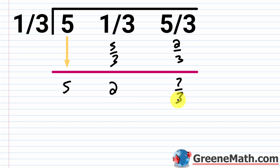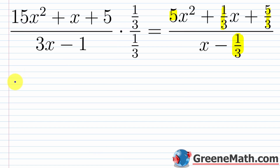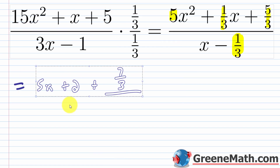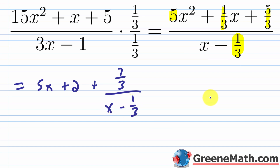Now, the first part matches: remembering that degree drops by 1, we get 5x plus 2 as the quotient. But the remainder is different from what we got before — last time we got 7, now we have 7/3. So we write plus 7/3 over x minus 1/3. Because we changed the form, the remainder must go over this modified denominator x minus 1/3, giving us 5x plus 2 plus 7/3 over x minus 1/3.